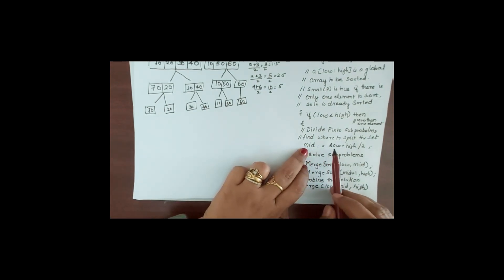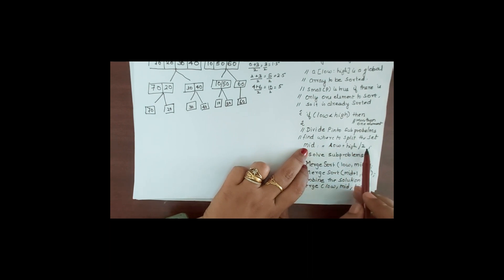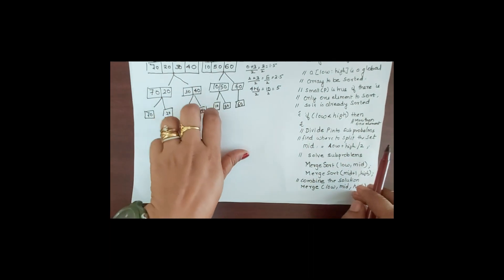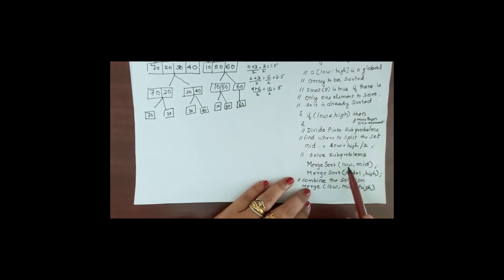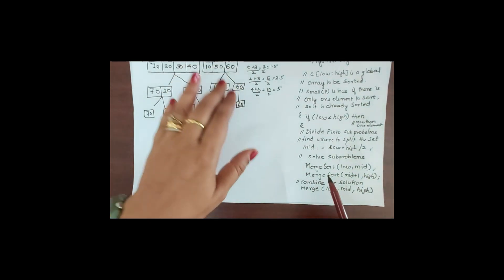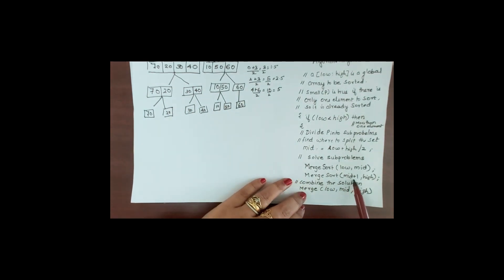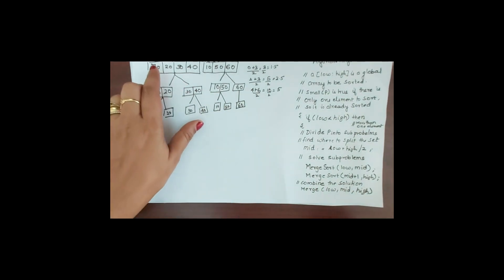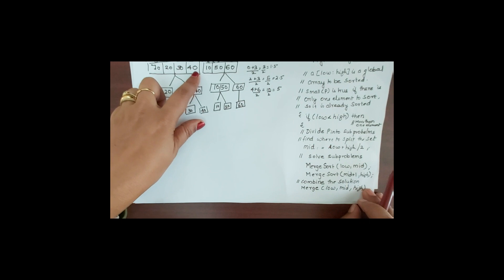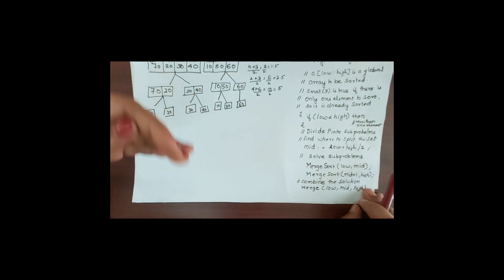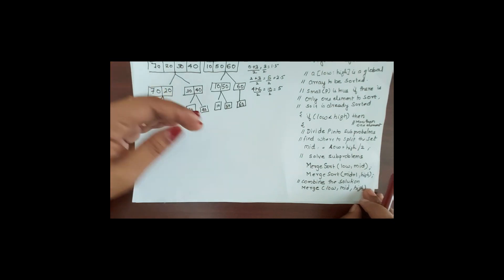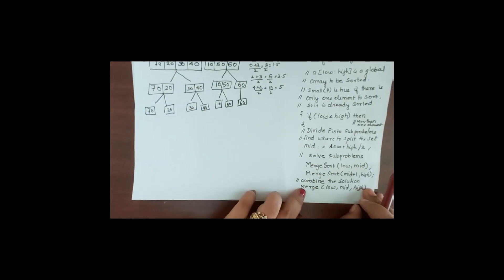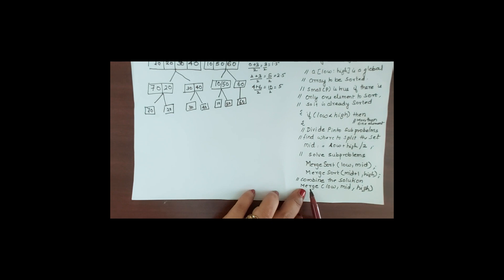To summarize the split: we split from low to mid = (low + high) / 2. Then we perform merge sort recursively on [low, mid] and [mid+1, high]. This is the recursion. After both halves are sorted, the algorithm calls merge(low, mid, high).